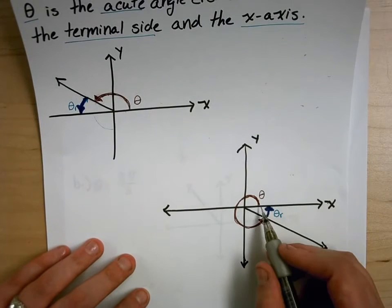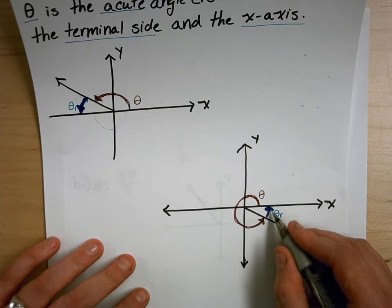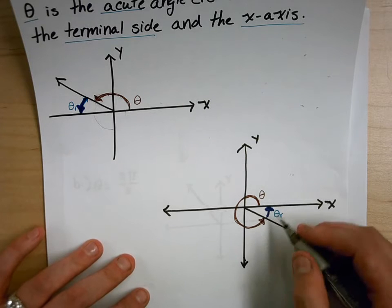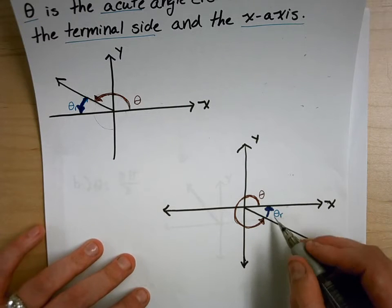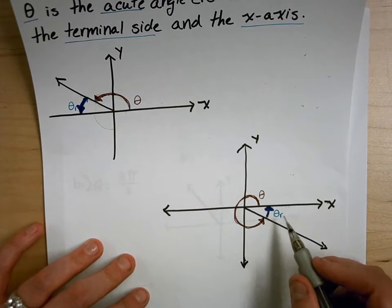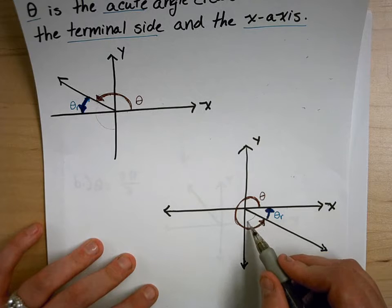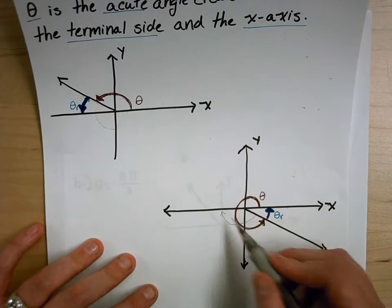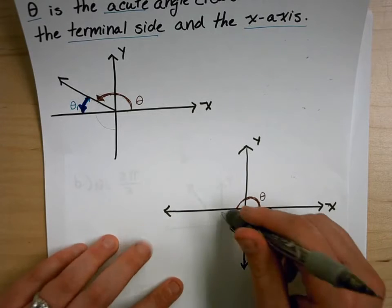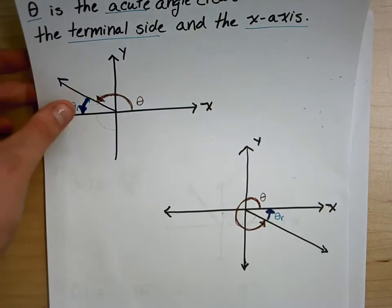For example, we have our original angle theta, and our reference angle theta r is this acute angle created right here between the x-axis and the terminal side. Notice I didn't draw the angle from the other side of the x-axis, because that angle would not be acute. We always need to create an acute angle from the x-axis to the terminating side.